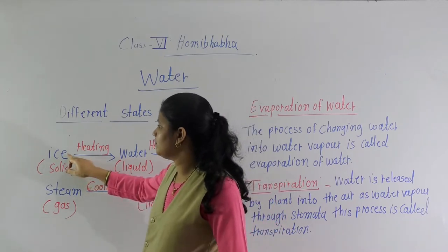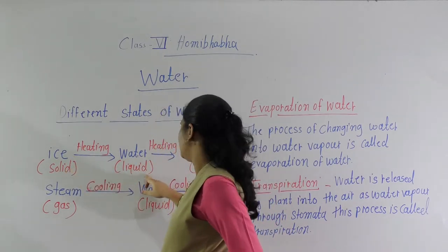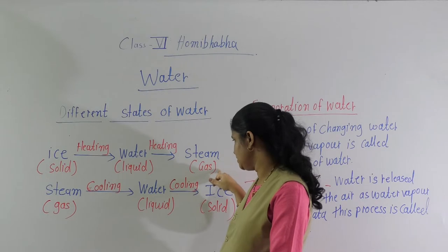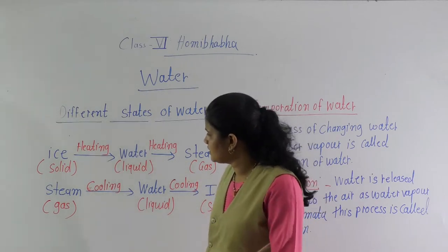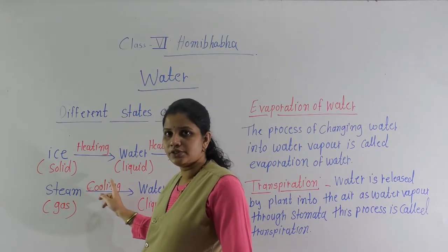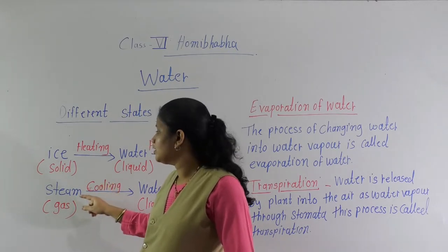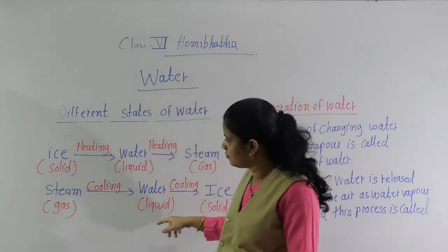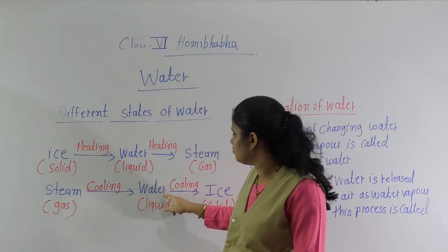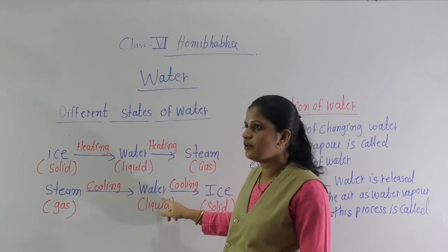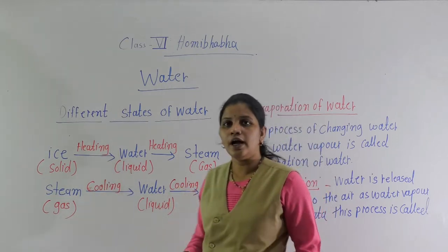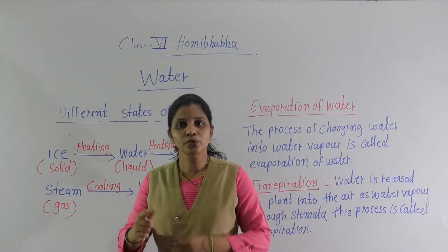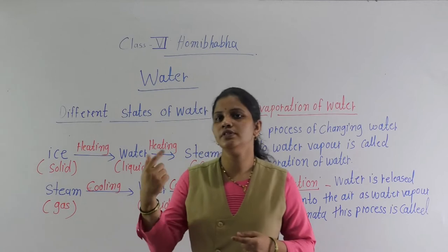These three are examples of the three different states. Ice is in a solid state, water is in a liquid state, and steam — or you can say water vapors — is in a gaseous state. Now, steam on condensation: when water vapors cool down, they convert into water droplets. And if you keep that water in a freezer at 0 degrees Celsius, water will convert back into ice.